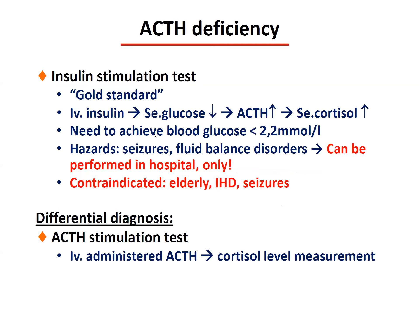The stress target for the insulin stimulation test is a glucose level less than 2.2 mmol/L. Excessive hypoglycemia must be avoided as it can be lethal. This test is not fully safe because seizures and fluid-based disorders can develop; it must be performed in a hospitalized patient. It is contraindicated in patients with heart disease, seizures, or poor cardiovascular status in the elderly. For differential diagnosis, the ACTH stimulation test differentiates primary from secondary: in primary disease ACTH won't increase cortisol, while in secondary disease it will, showing the target gland is intact.